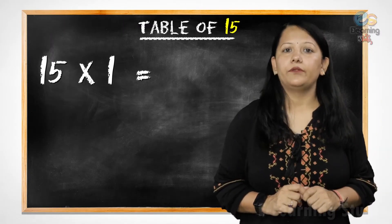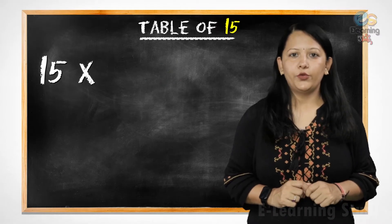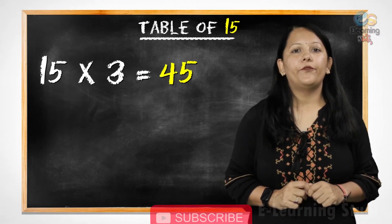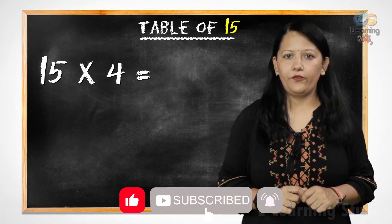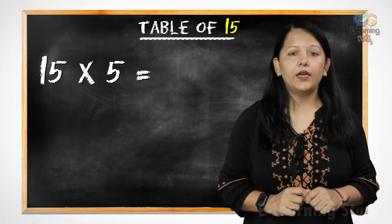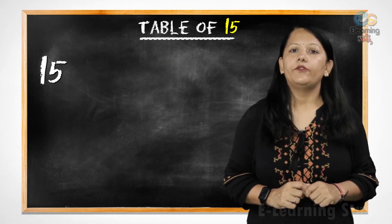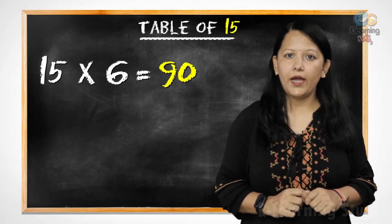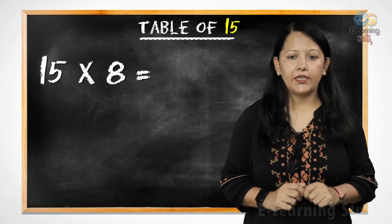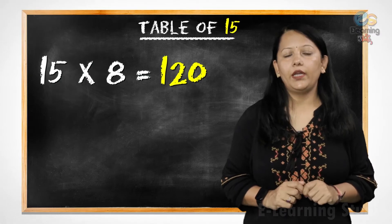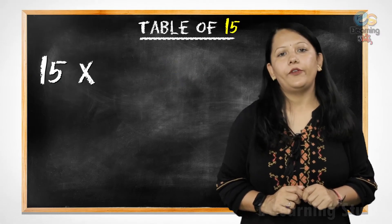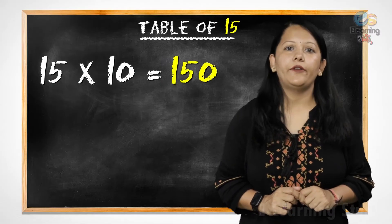15 ones are 15. 15 twos are 30. 15 threes are 45. 15 fours are 60. 15 fives are 75. 15 sixes are 90. 15 sevens are 105. 15 eights are 120. 15 nines are 135. 15 tens are 150.